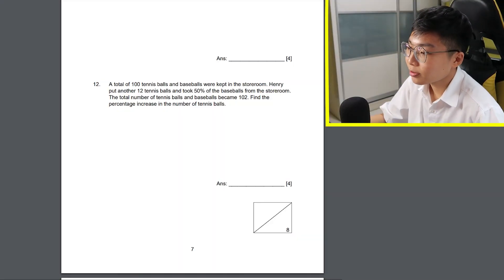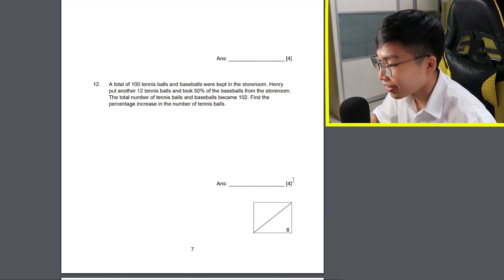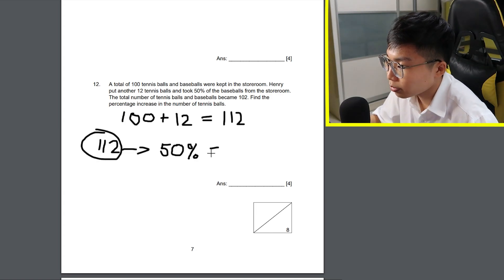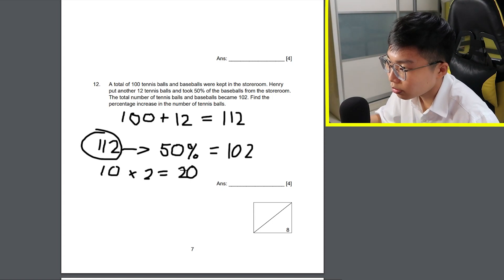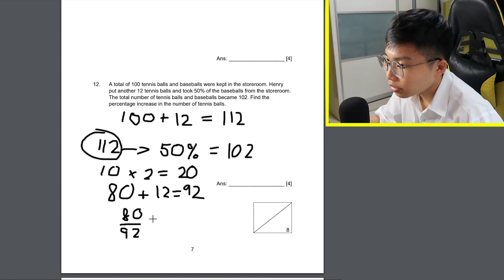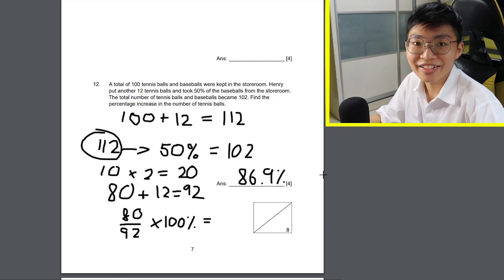Finally the last question. A total of 100 tennis balls and baseballs were kept in the storeroom. Henry put another 12 tennis balls and took 50% of the baseballs from the storeroom. The total number of tennis balls and baseballs became 102. Find the percentage increase in the number of tennis balls. 4 marks, you know. So you know this is not gonna be easy. Where do I even start? Okay, so 100 plus 12 equals 112. From 112, he took out 50% which became 102. Oh, so it means he only took out 10. So which means 10 times 2 equals 20, which is the total number of baseballs, I think. So it means there were 20 baseballs initially inside, meaning there were 80 tennis balls inside. And after he put 12 in, there will be 92. So 80 out of 92 times 100% equals 86.9%. If I get this, I'm a total genius.